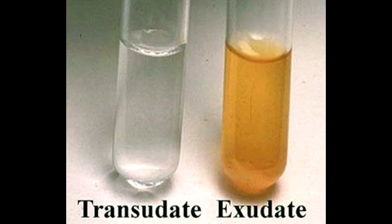Define exudate. Exudate is any fluid that filters from the circulatory system into lesions or areas of inflammation. An easy way to remember exudate is that this is what happens during inflammation — fluid and cells go through loose blood vessels, because in inflammation blood vessels become loose to allow neutrophils and fluid to pass through. So remember: exudate is associated with inflammation.